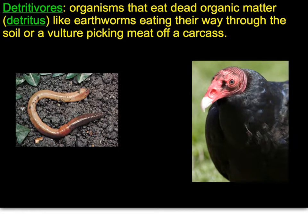Imagine what an earthworm does as it goes through the earth — it gobbles up the dirt, and in the dirt there are all kinds of small particles: roots, decomposing pieces of debris, leaf matter. The earthworm is eating that, swallowing it like we would swallow something, and decomposing it internally.